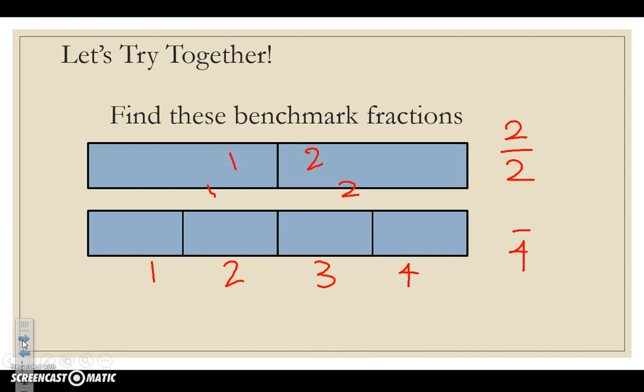And then how many are shaded in? 1, 2, 3, 4. Both of these are equal to one whole because all of their parts are shaded in. But with a benchmark fraction, we can notice that 2 over 2 is equal to 4 over 4.